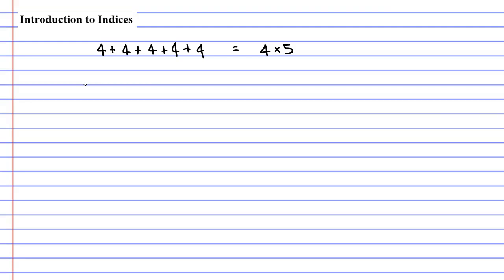So what if we wanted to do repeated multiplication? What if we wanted to multiply 4 five times? Well, this is where we get into indices. We write the number 4 with a little 5 at the top right corner of it. We say 4 to the power of 5.